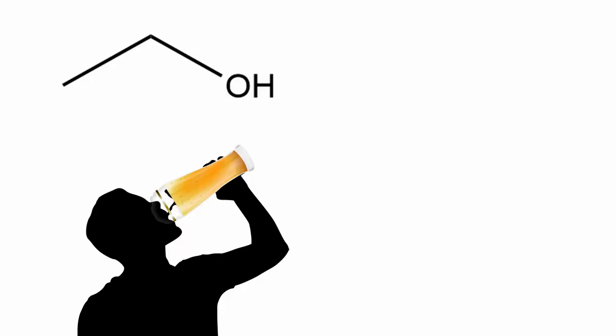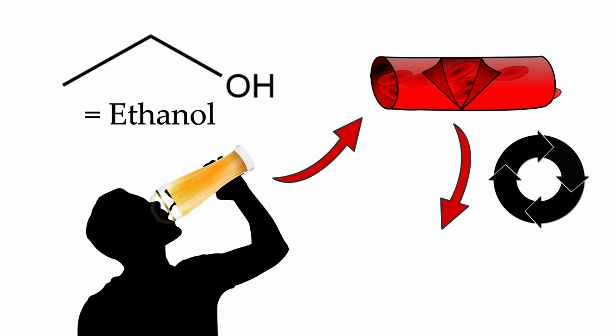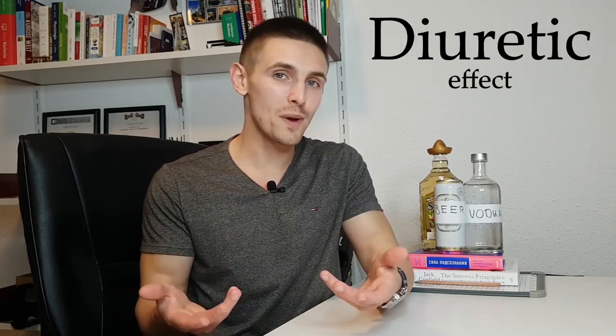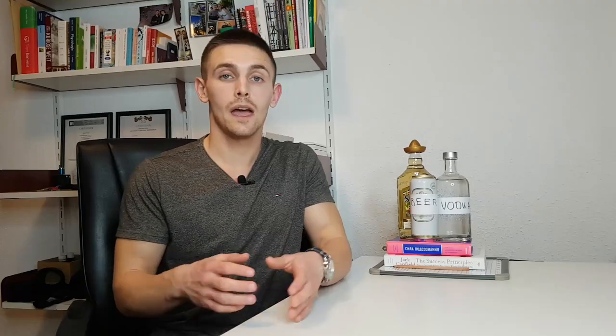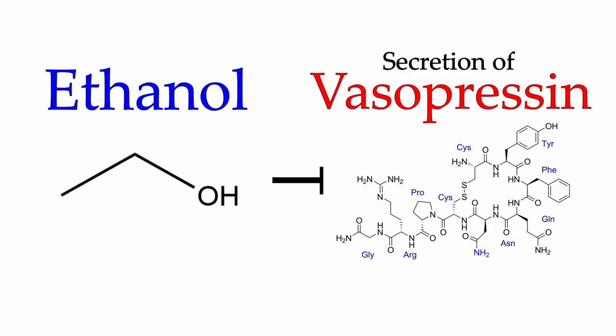What actually happens physiologically when we drink alcohol? When we consume alcohol, or in terminology ethanol, it enters directly into the bloodstream where it is transported through the blood circulation to the liver. There it is actually treated as a toxin. Physiologically, alcohol has a diuretic effect on the body, which basically means that alcohol dehydrates us, as the body produces much more urine. Biochemically, ethanol inhibits a protein called vasopressin, which is an anti-diuretic, and this leads to the production of more urine.